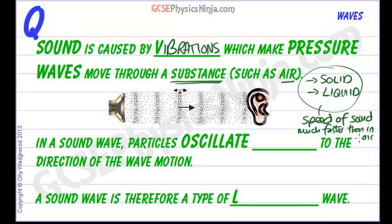The reason for that is because the particles in solids and liquids are closer together and they have stronger bonds between each particle. So the particles vibrate and bump into their neighbour much faster.